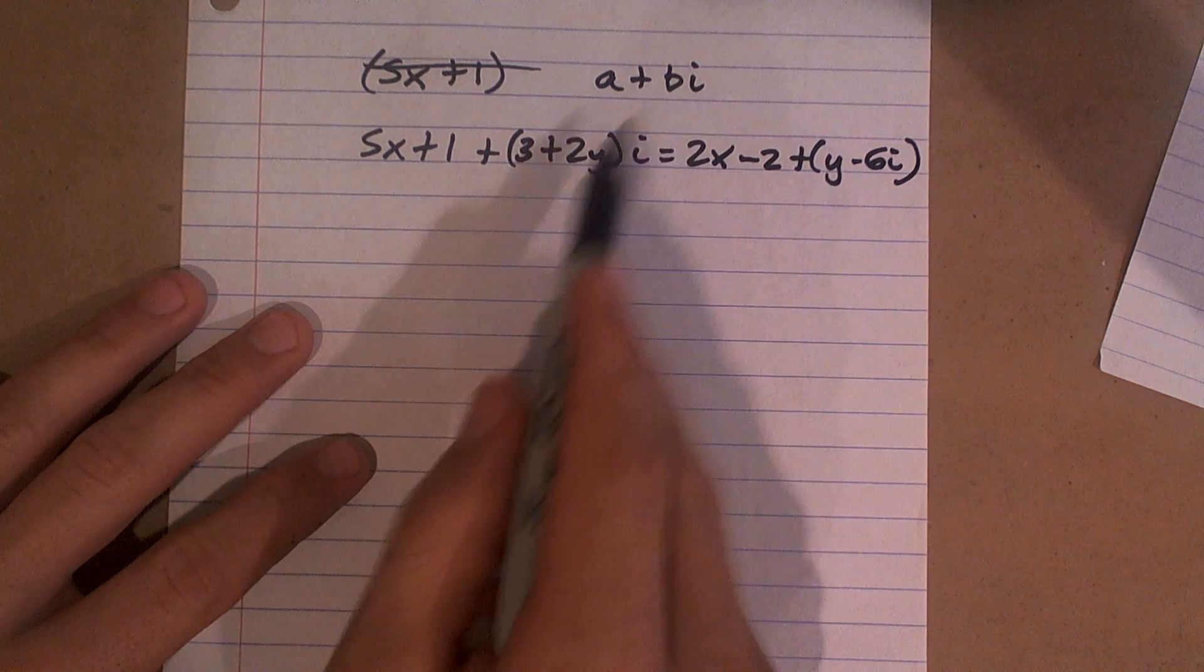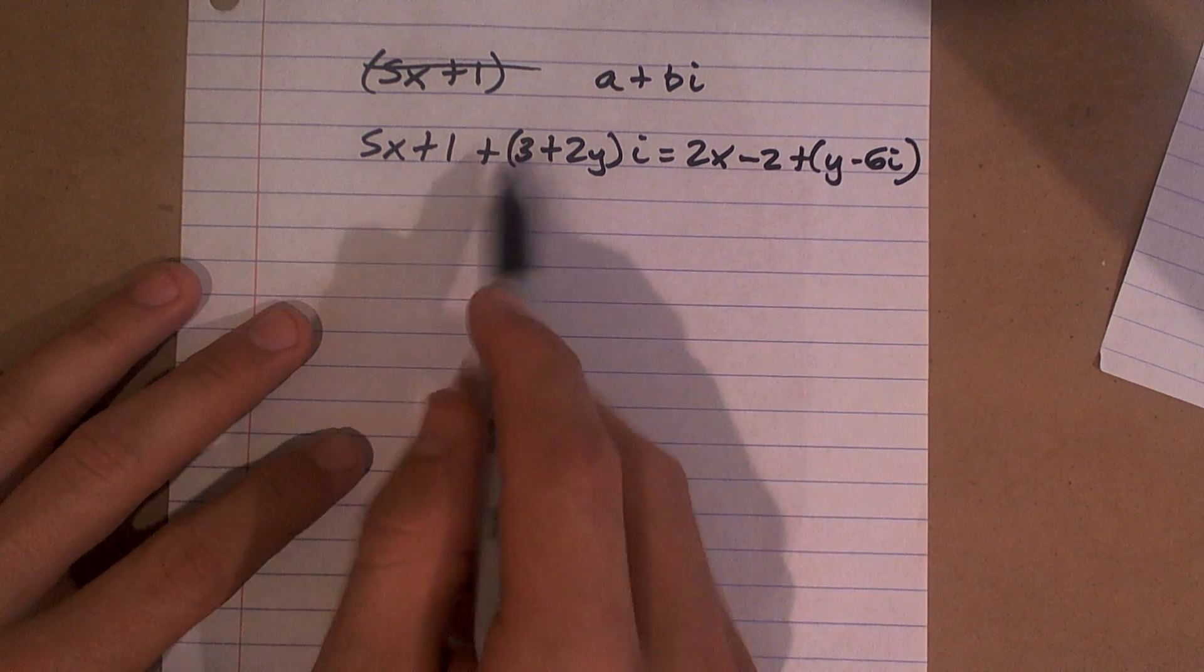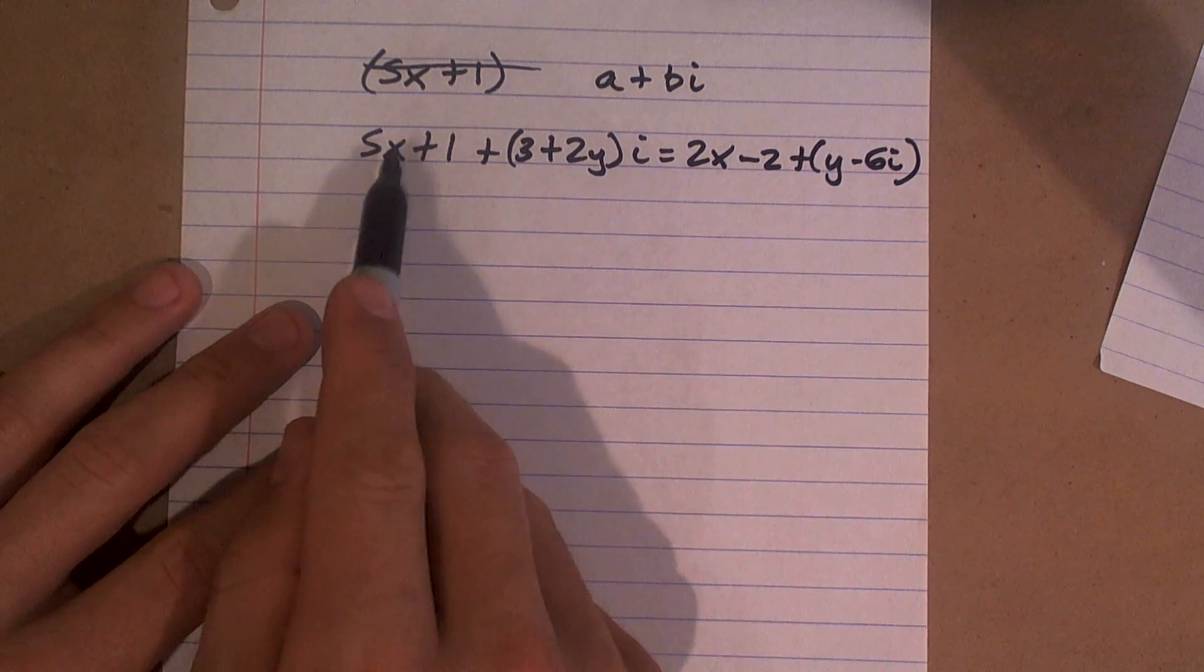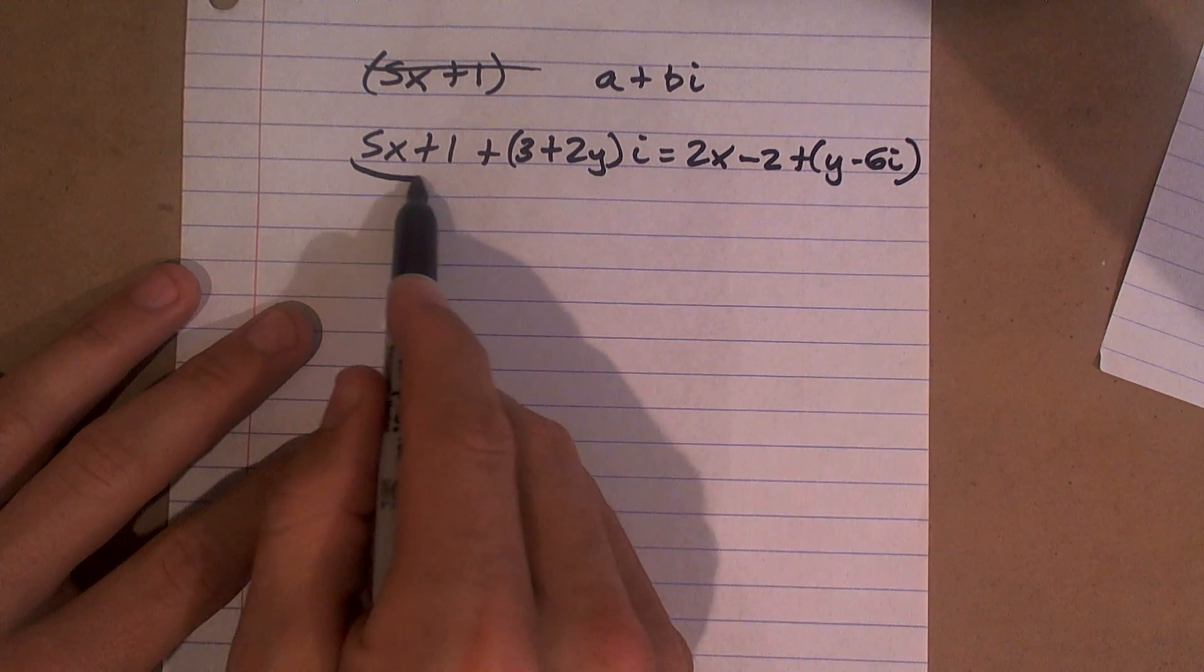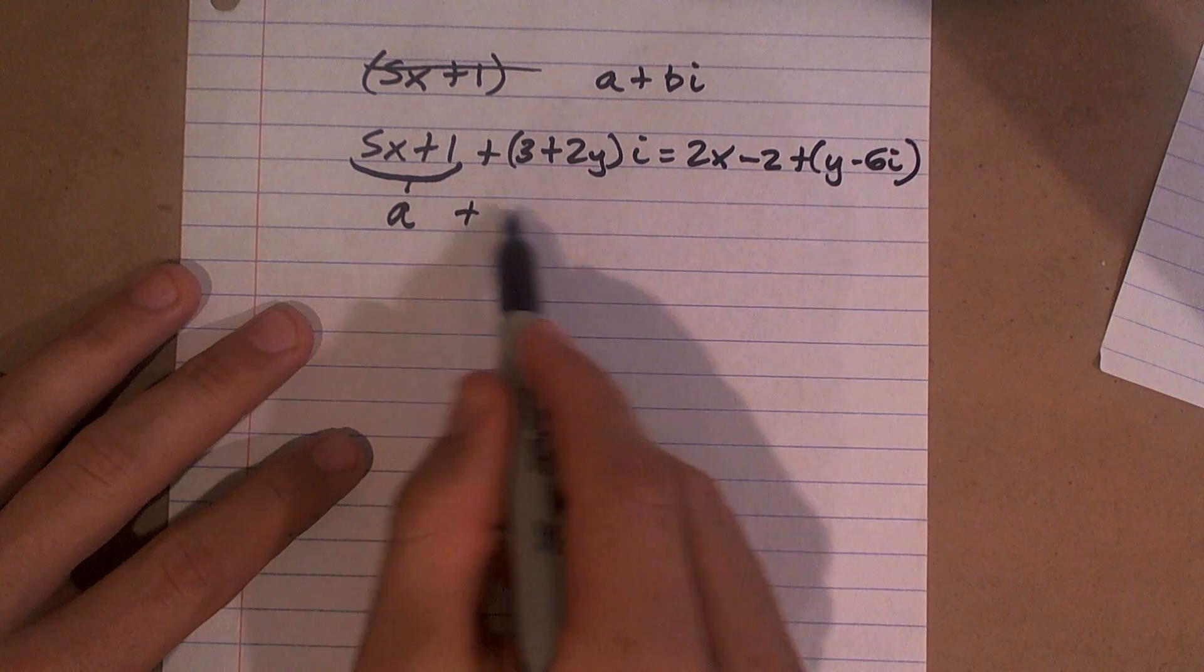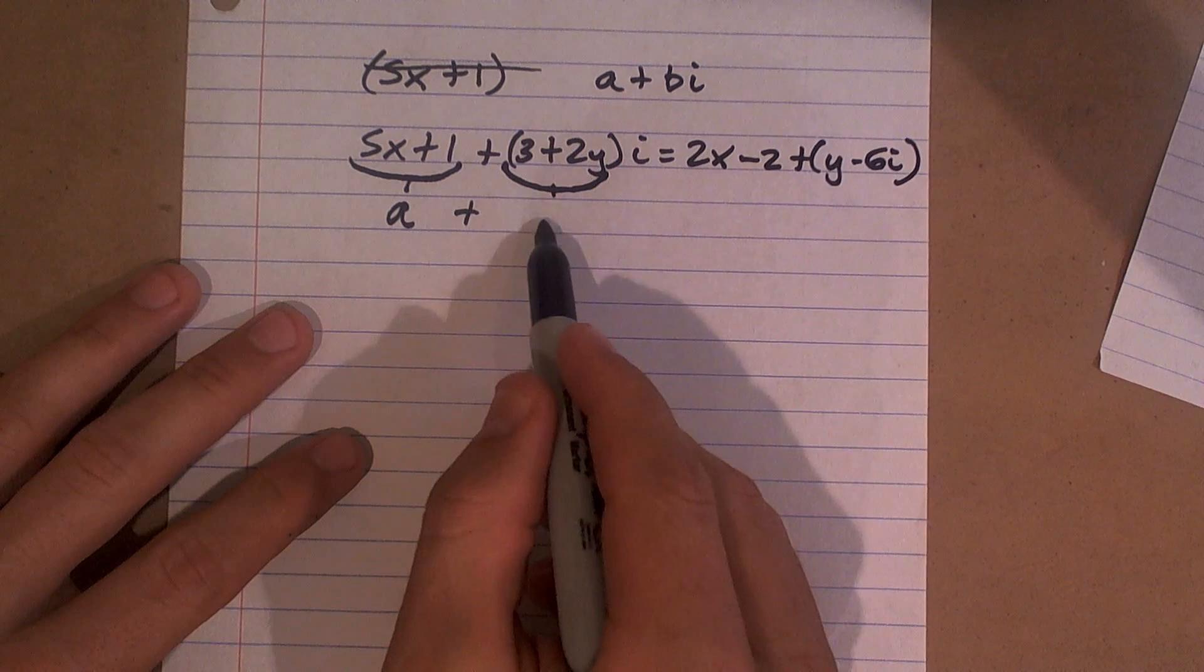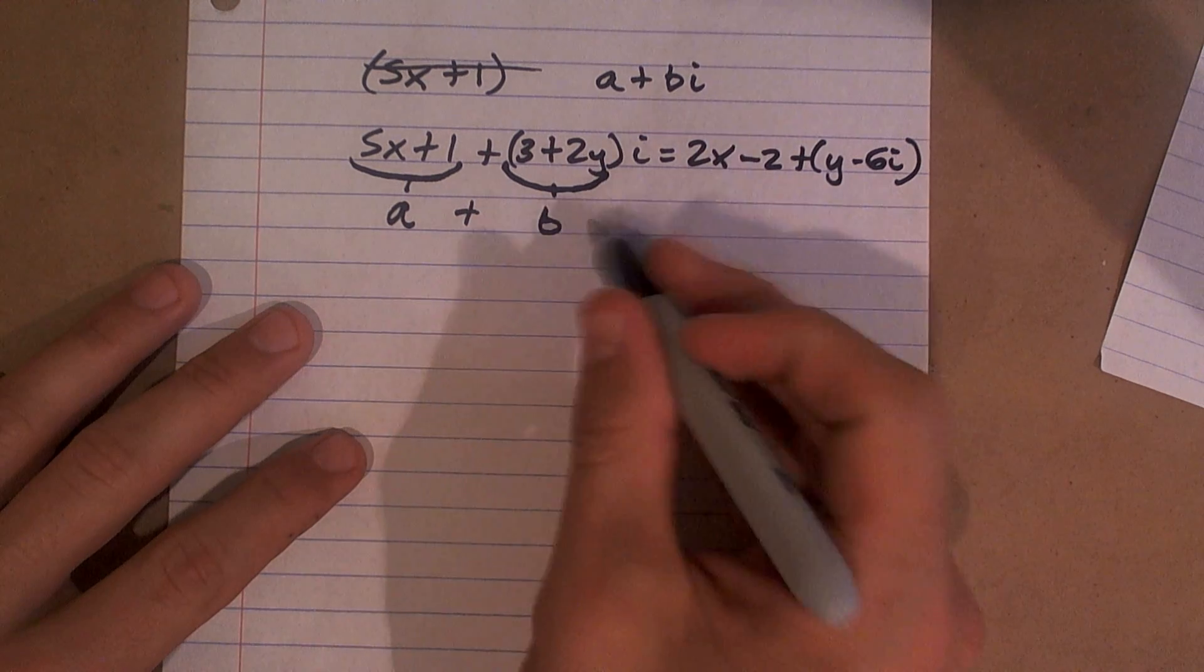Well, obviously you can say b is going to be multiplied by your i, right? And a is going to stand alone. But you can't just say a is going to be 1 or a is going to be 5x. You've got to group everything together. So I'm going to say that's going to represent my a plus this is multiplied by my i, which will be my b times i.